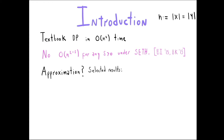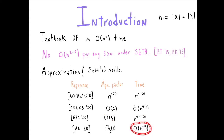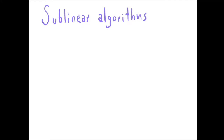This naturally motivates the study of approximation algorithms. If instead of computing the edit distance exactly we allow ourselves to approximate it, then maybe we can overcome this quadratic barrier. There is a vast literature here. In particular, the best approximation factor achievable in sub-quadratic time is 3+ε, and in time n^(1+ε) for any arbitrarily small ε we can get a constant factor approximation whose precise factor depends on ε.